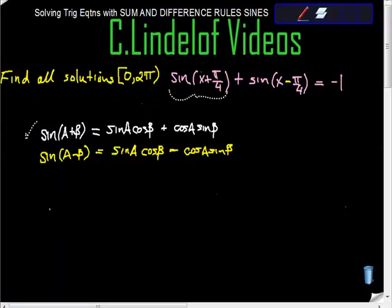So that gives us... No, it doesn't. Sorry. That gives us sin x cos(π/4), right? Plus, this plus is this one, cos x sin(π/4). And then I'm just going to move on.